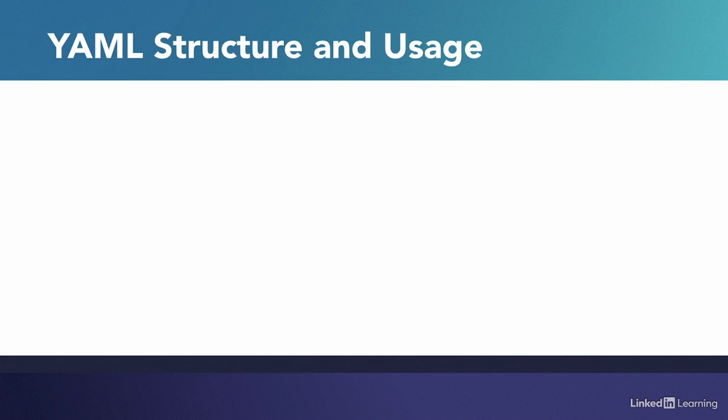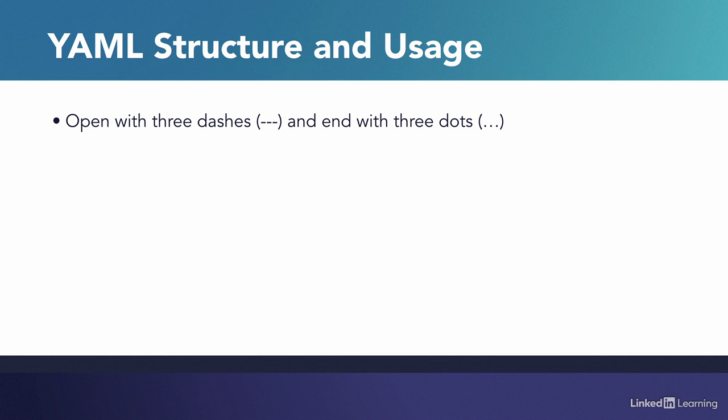YAML documents usually start with three dashes and optionally end with three dots. Sometimes the dots are omitted if there's only one document. If there are multiple documents within a single file, then each should be separated with the common three dashes.